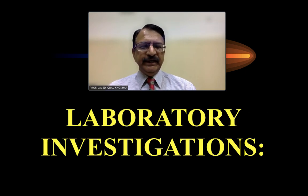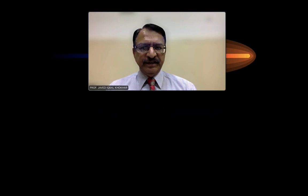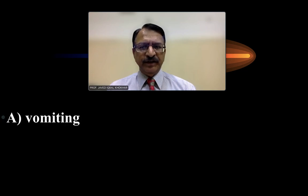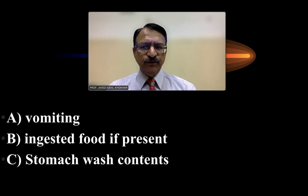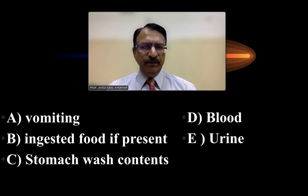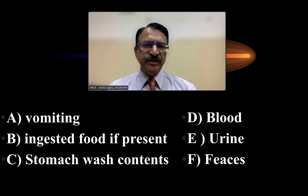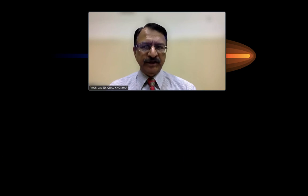Regarding lab investigation, in acute poisoning the poison can be detected in the following sources: the vomitus, the ingested food, stomach washing, blood, urine, and feces. These are the sources from which you can detect the poison.